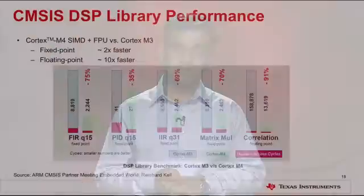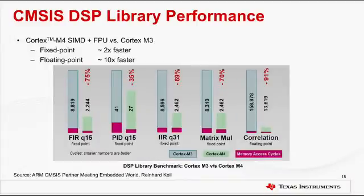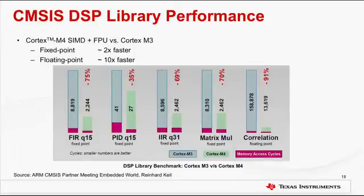For details on function descriptions, return type, arguments, and examples, please refer to the CMSIS DSP library documentation made available by ARM. The CMSIS DSP library is completely written in C and builds and runs on Cortex-M4, M3, and M0 processors. Maximum use of Cortex-M4F intrinsics allows for high performance on Cortex-M4-based devices. The DSP library performs about 2 times faster on Cortex-M4 compared to Cortex-M3, and about 10 times faster on Cortex-M4 with floating-point compared to Cortex-M3.